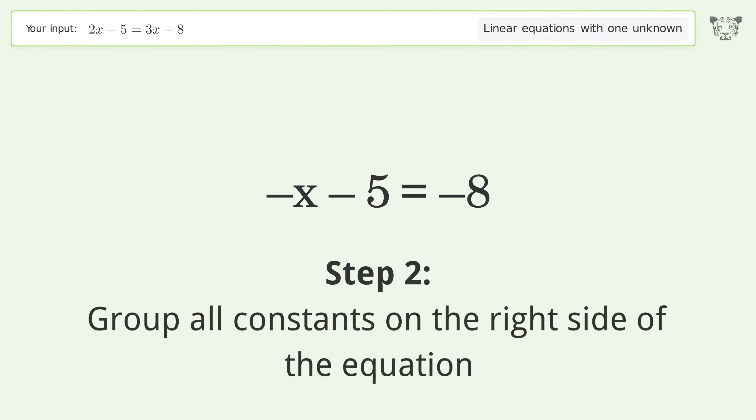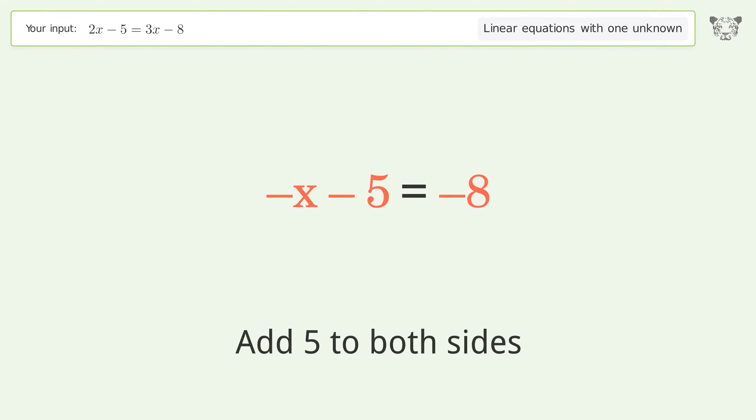Group all constants on the right side of the equation. Add 5 to both sides. Simplify the arithmetic.